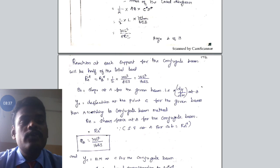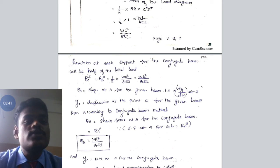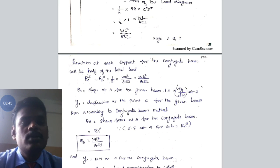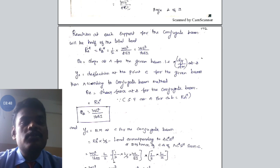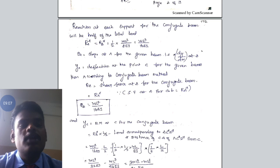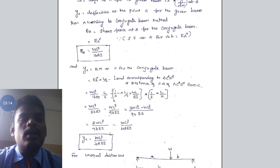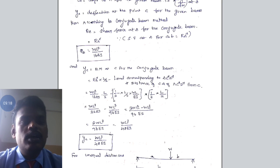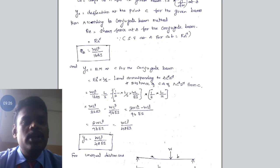To find the slope and deflection of the original beam, we calculate the shear force and bending moment of the conjugate beam. First, the slope at A, theta A, equals the shear force at point A in the conjugate beam. The shear force at A equals the reaction RA*, which we already found to be WL² divided by 16EI. Therefore, the slope of the original beam at A equals WL² divided by 16EI.